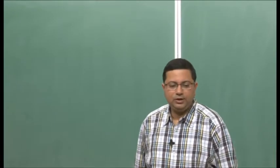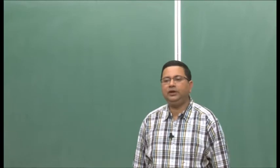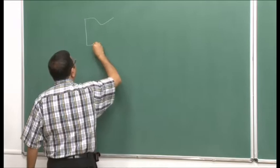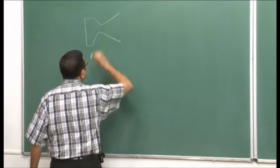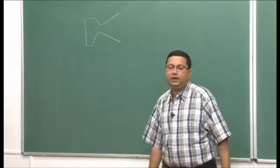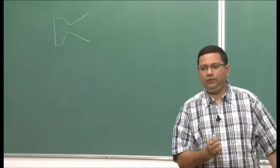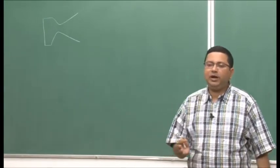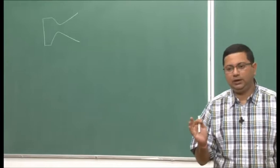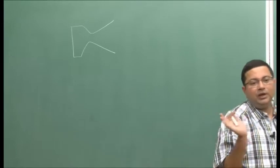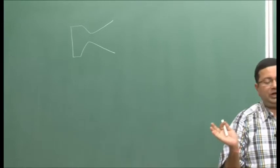Good morning. In the last couple of lectures, we have been discussing shaped nozzles. We first discussed a conical nozzle, where the nozzle is a cone, and we showed that because of the three-dimensional effect there is a loss in performance, which was given by a factor lambda that depends on the half cone angle. This loss is primarily because of the flow deviating from the nozzle axis due to the three-dimensional effect.